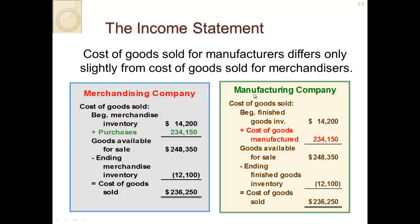For a manufacturing company, you start with beginning finished goods inventory — items that have gone all the way through the manufacturing process from raw materials to work in process to finished goods. You add the cost of goods manufactured, which gives you goods available for sale. Then you subtract ending finished goods inventory to get cost of goods sold. The process is slightly different from a merchandiser but follows the same overall logic.